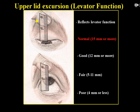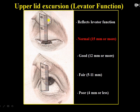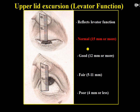Another sign is levator function, which depicts the amount of lid movement performed by the levator palpebrae superioris. We ask the patient to look down, press the superior orbital margin with the thumb to neutralize the frontalis muscle, then ask the patient to look up and measure the distance covered. If it is 15 mm or more, it is normal. More than 12 mm is considered good. Between 5 to 11 mm is fair, and less than 4 mm is poor levator function. This is an important factor because the treatment of ptosis ultimately depends on this and one other phenomenon.